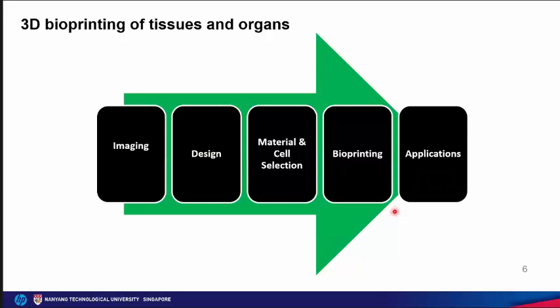A typical process for the bioprinting of 3D tissue includes imaging, design, material and cell selection, bioprinting process, and applications. Non-invasive imaging modalities such as CT or MRI are used to collect raw imaging data, which are then processed to produce multiple 2D cross-sectional images.